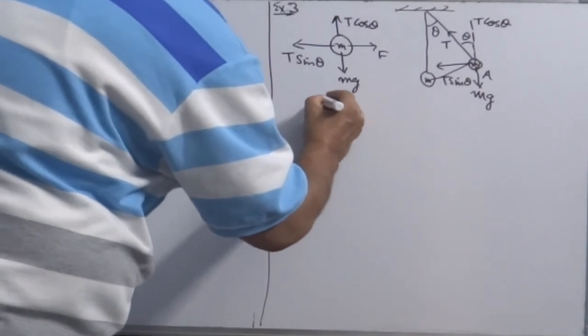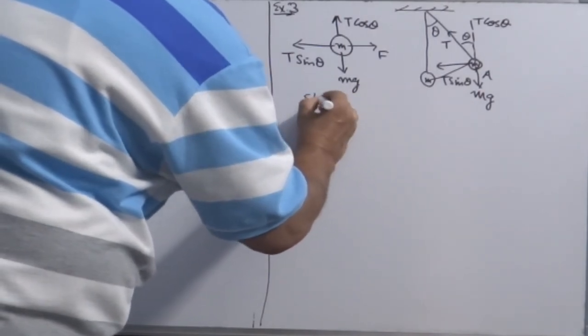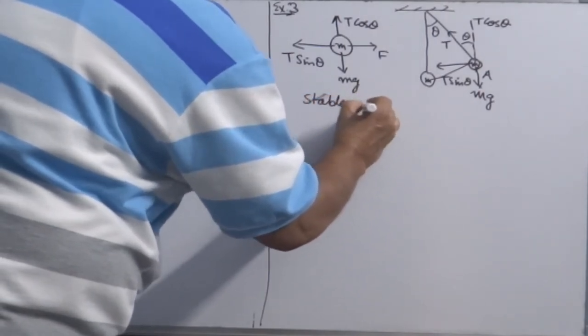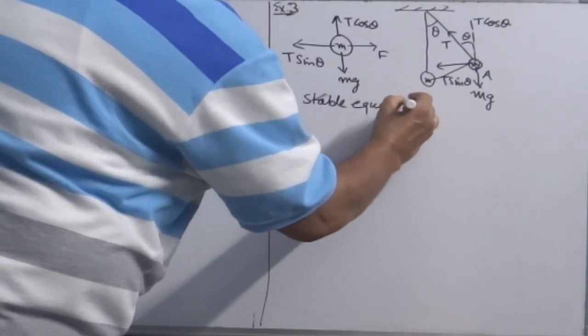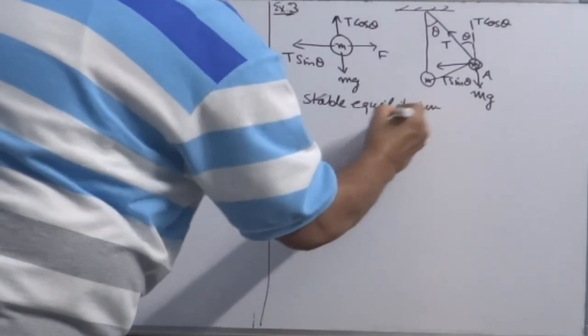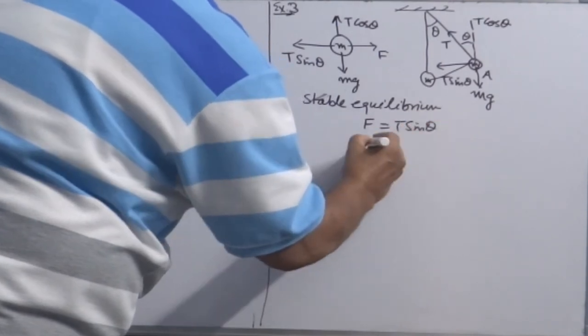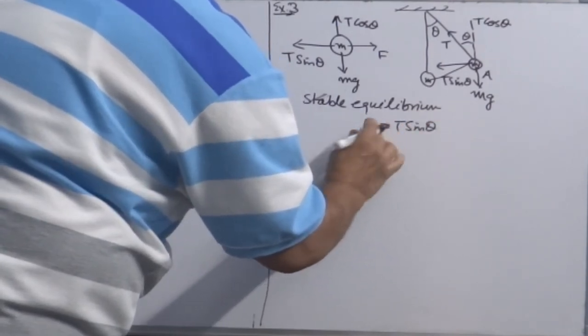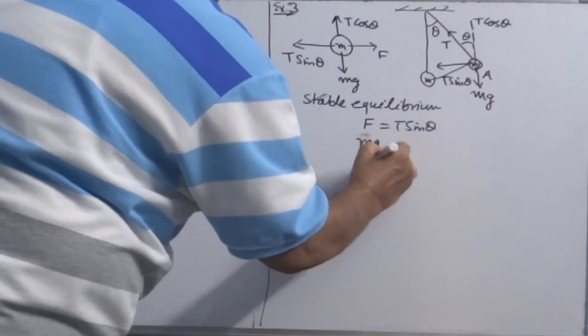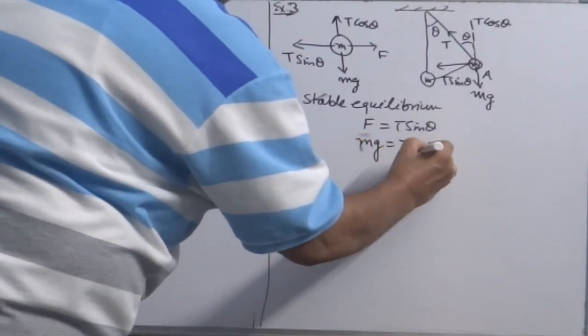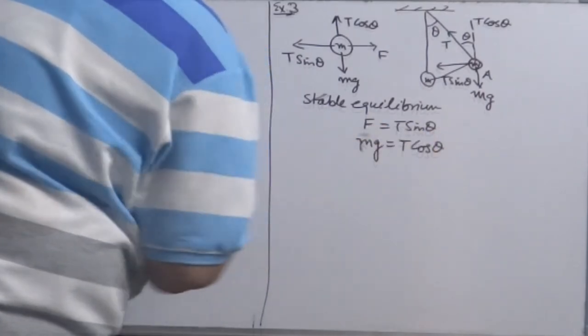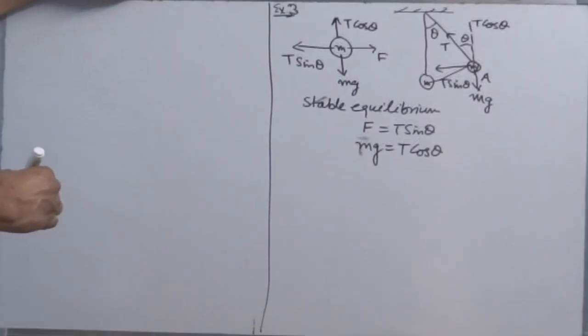So that object will be in stable equilibrium of rest. For this, for stable equilibrium, condition F should be equal to T sine theta, and mg should be equal to T cos theta. If it is not stable, then bob has to move.